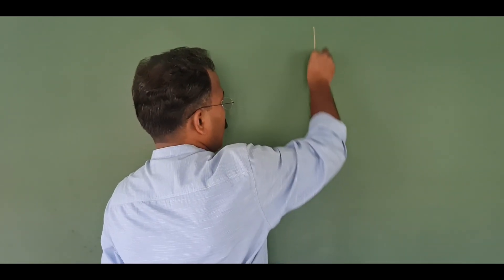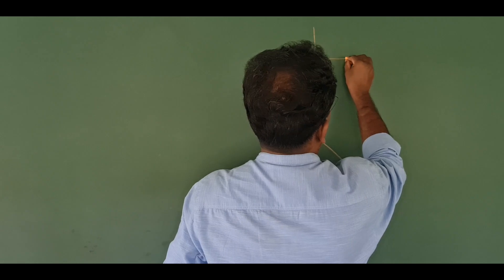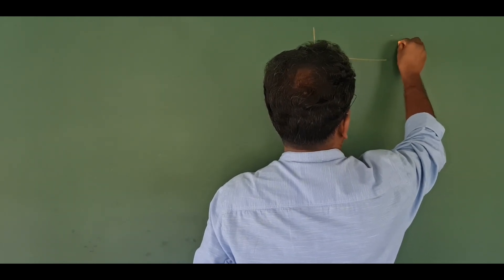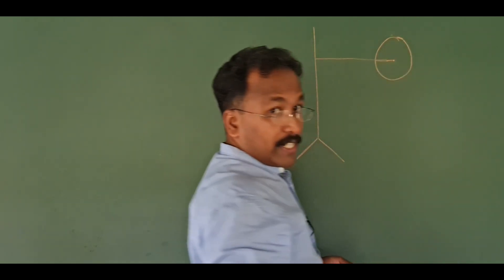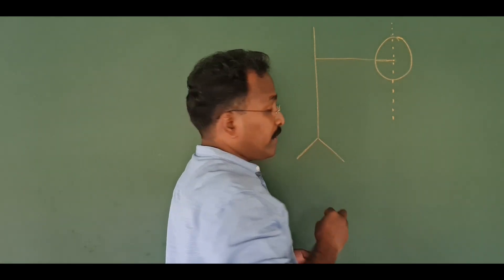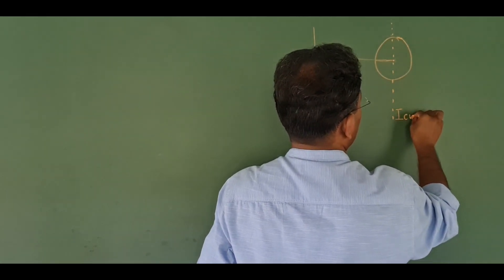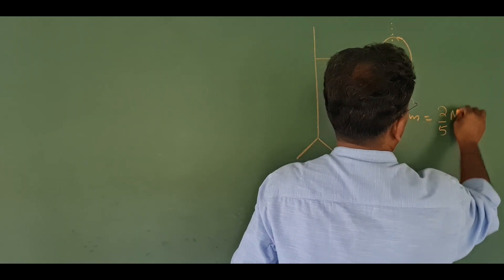Now we are going to finish the class. We will study two theorems — let's look at this one here. That is a solid sphere. The axis goes through the center of mass. The moment of inertia for a solid sphere, ICM, is 2 by 5 mR squared.